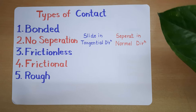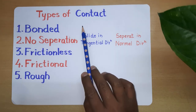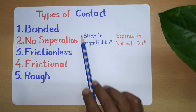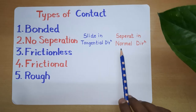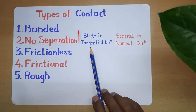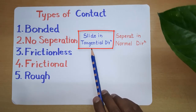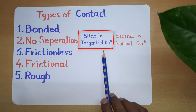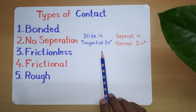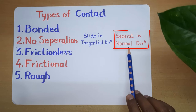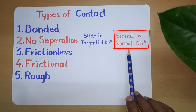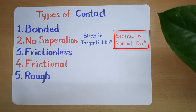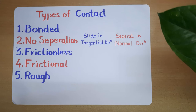Now let's understand the types of contact. Types of contact are defined based on two criteria: first, whether the bodies can slide in the tangential direction, and second, whether the bodies can separate in the normal direction. Based on these two rules, we have a total of five types of contact.